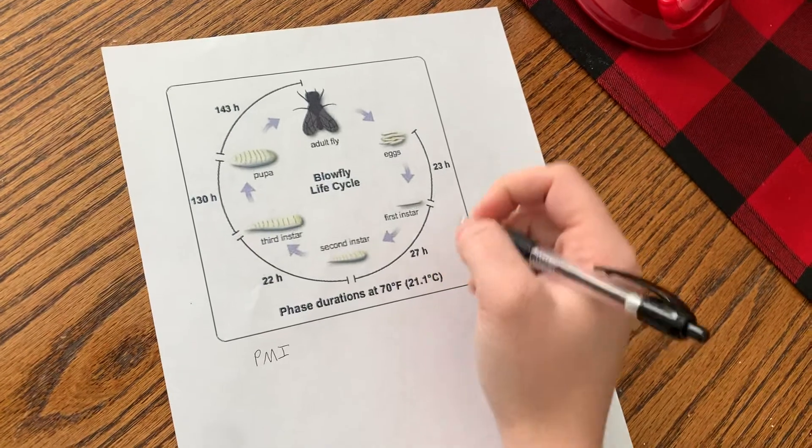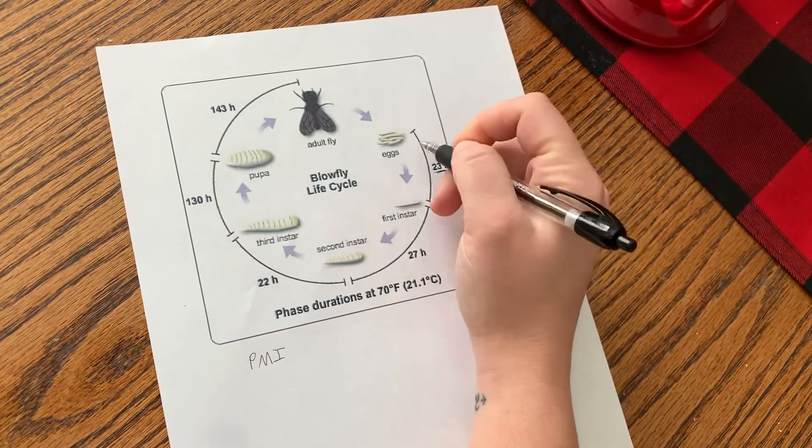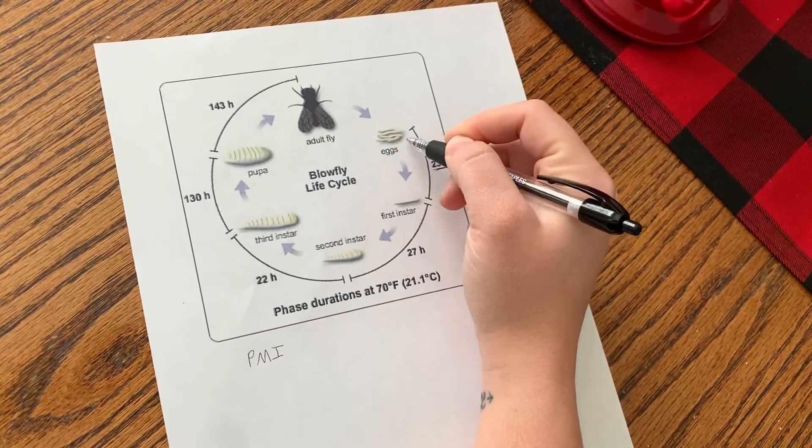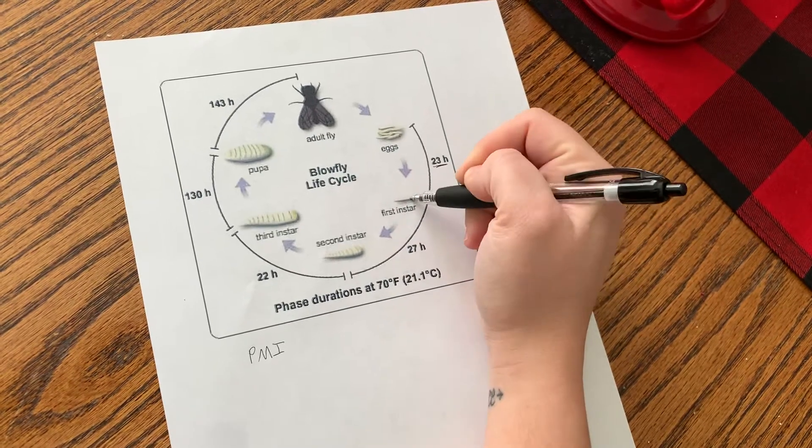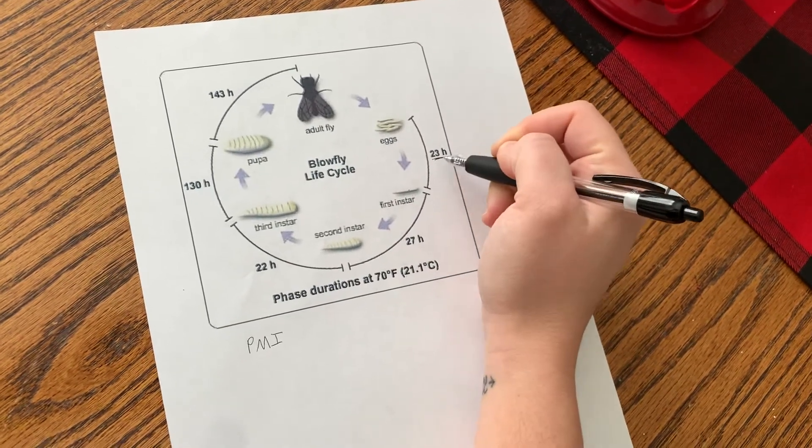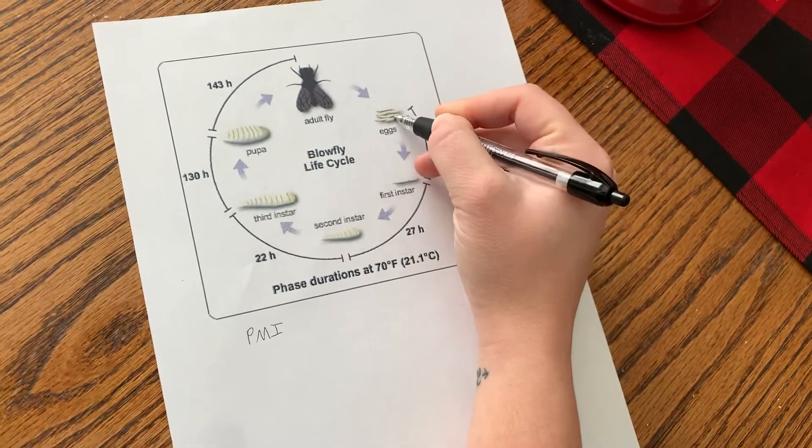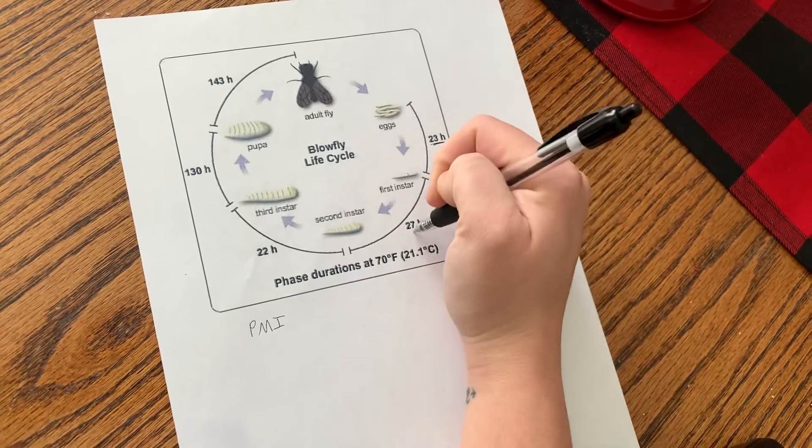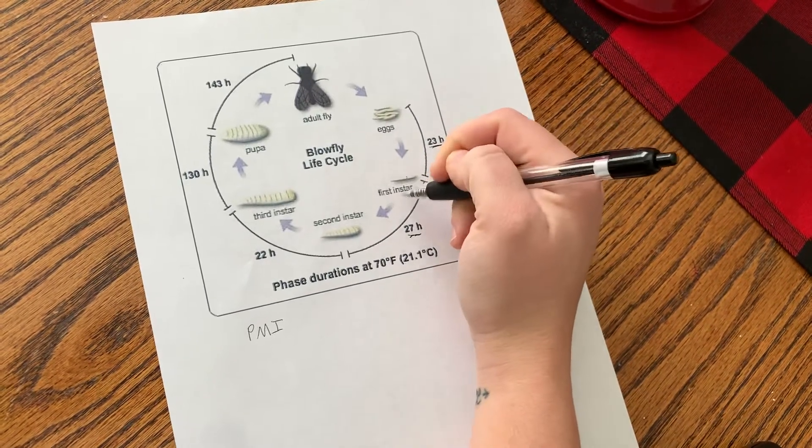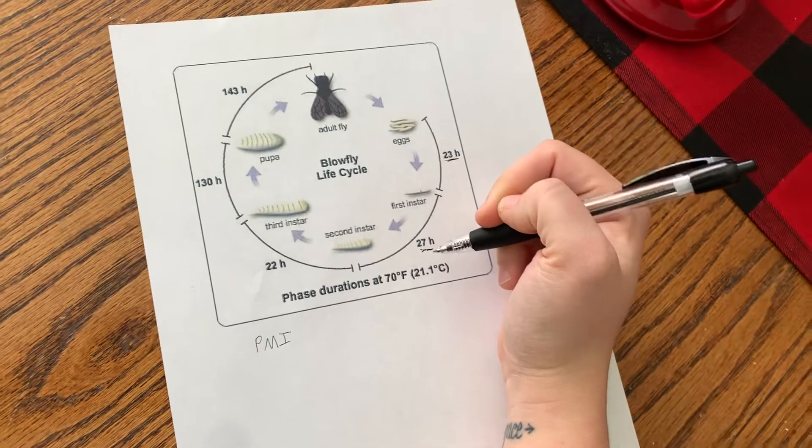Also I want to tell you that each one of these time frames only represents the hours from one stage to another. So this 23 hours only talks about the time that it takes for an egg to turn into a first instar, 27 hours to turn from first instar to second instar, and so forth.